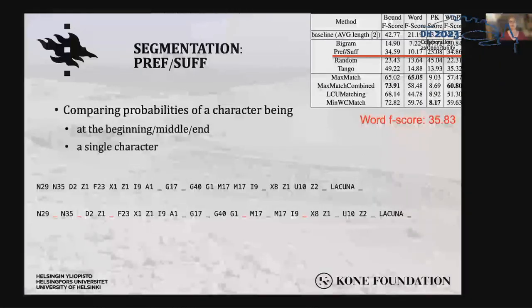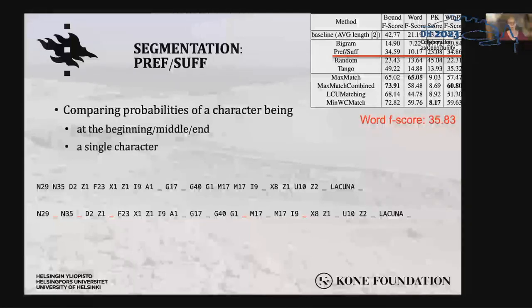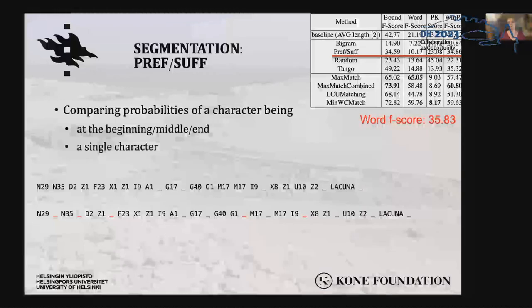Hieroglyphic words can be written in various ways using many different combinations of signs, making it more likely for a word form not to be found in the word list. We then decided to try a rule-based method and implemented the prefix-suffix method from Homburg and Chiarcos. The method compares the probabilities of a sign being at the beginning, middle, or end of the word, or as a single character forming the whole word. With an F-score of 35.83, it worked better on hieroglyphic text than on cuneiform, but far behind the greedy algorithm.